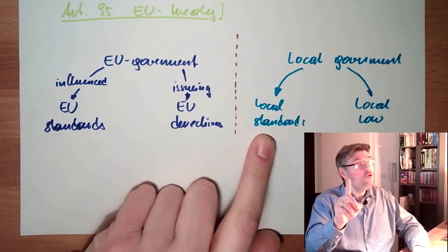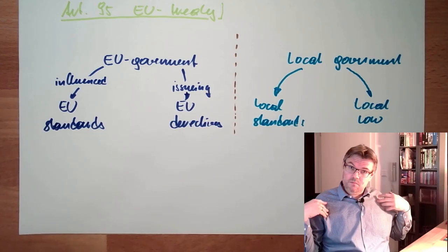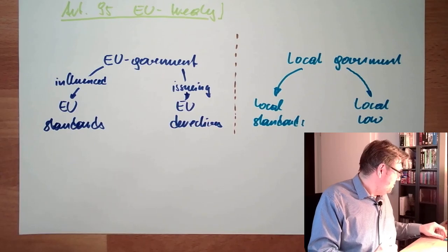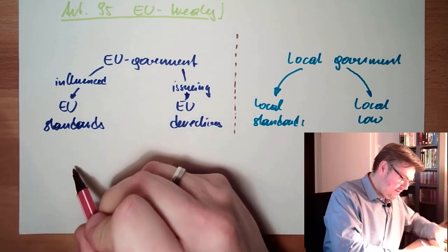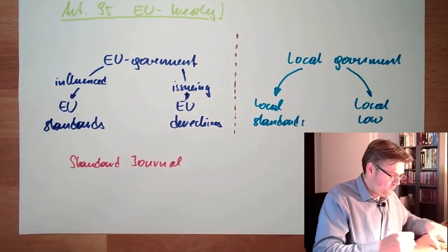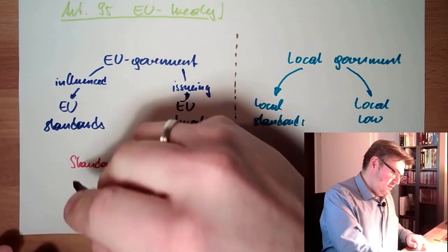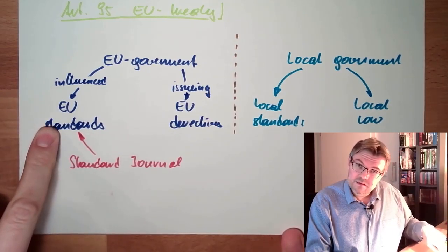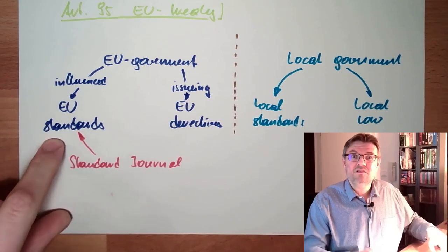However, there is the Official Journal of the EU government — the Official Journal. This journal sometimes mentions EU standards and points to them. If the Official Journal mentions EU standards as applicable for a directive, then that standard is so-called harmonized.